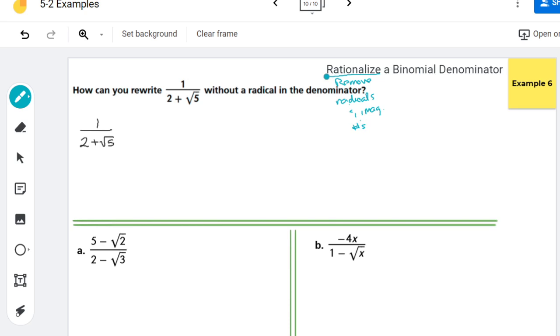So we are removing the imaginary numbers from the denominator of a fraction. That's our goal, because we do not like parties in the basement. We don't like radicals down there.